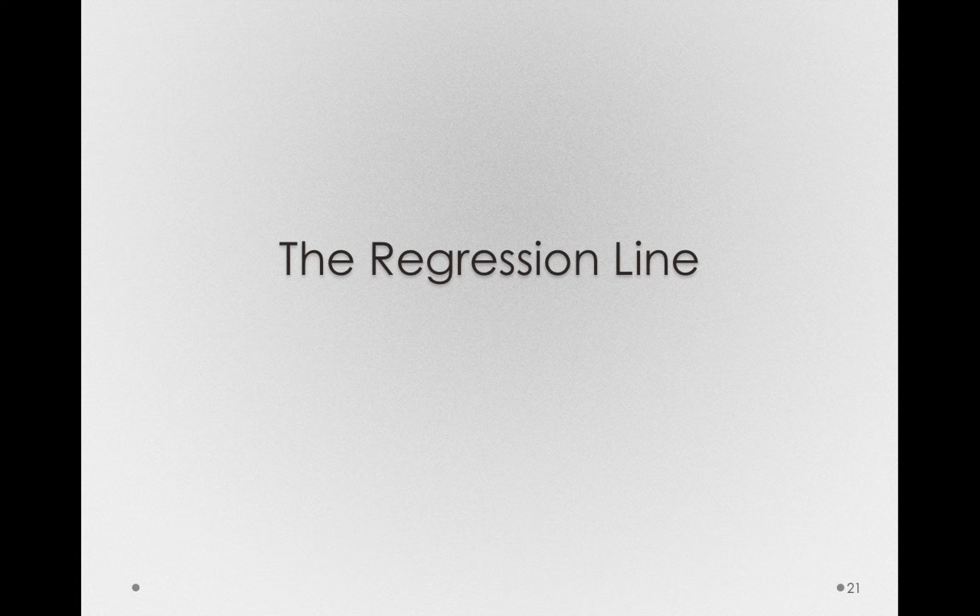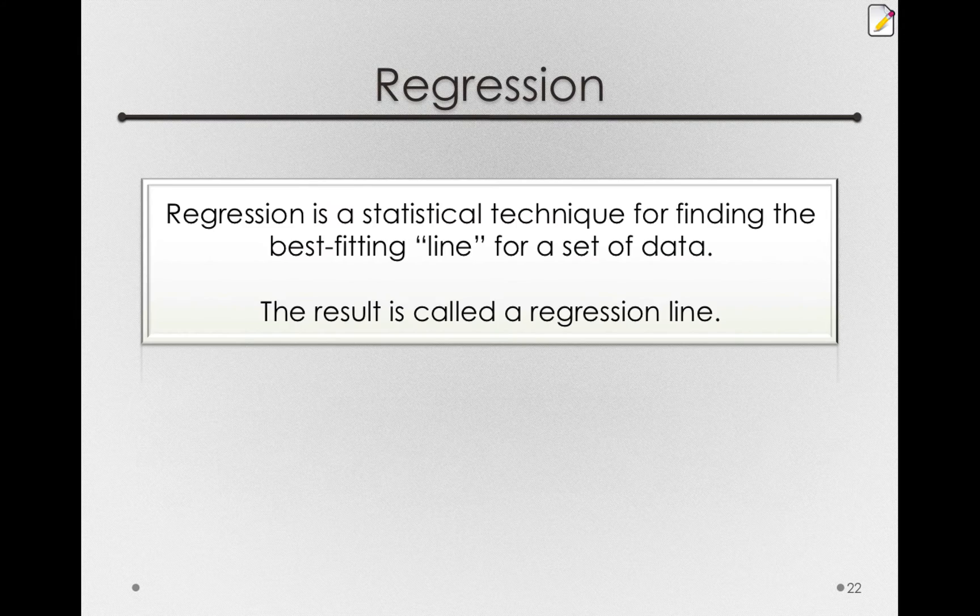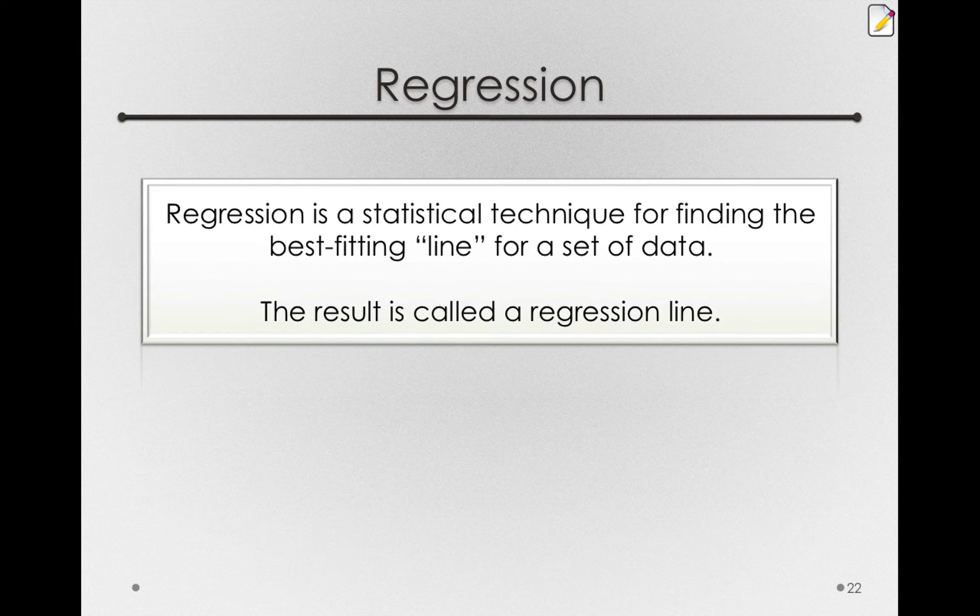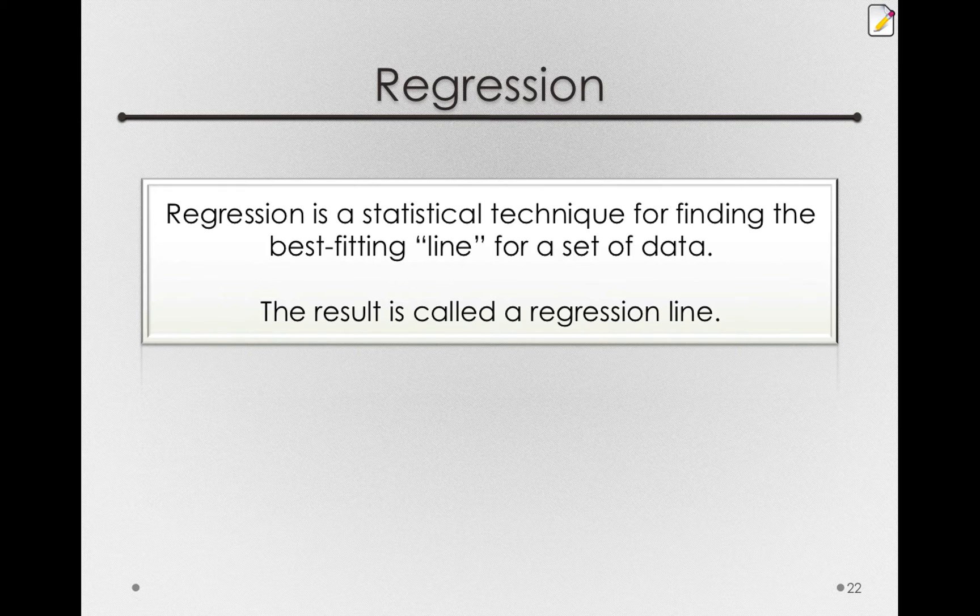The regression line is simply a line that best fits the data. But let's step back and talk about regression in general, and then we'll clarify what we mean by best fitting. Regression in general is a statistical technique for finding the best fitting line for a set of data, and the result of that is called a regression line. 'Line' is in scare quotes here because regression applies to many different types of models, and they don't necessarily have to be straight lines. We can do regression with curved lines or with planes. Regression as a technique is just a way of fitting a best fitting model.